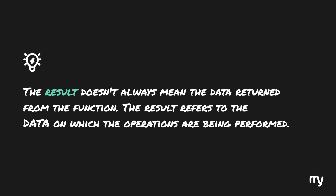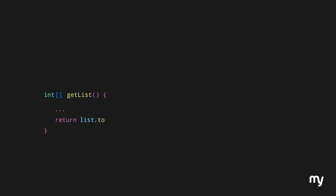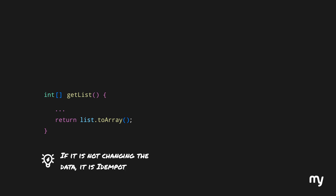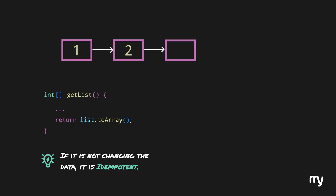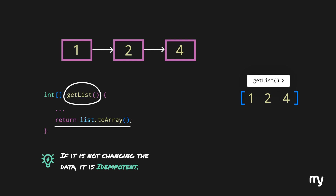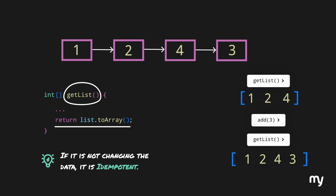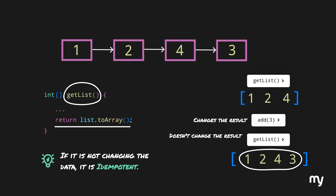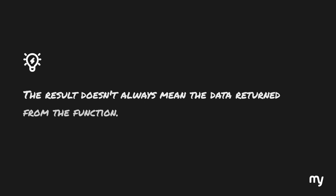An important point: the result doesn't always mean the data returned from the function. The result refers to the data on which the operations are being performed. What about functions which do not change the data, like a function which returns the elements of a list? The rule is: if it's not changing the data, it is idempotent. So even if a get list method returns different values every time — because the data was modified by an add function — the get list method will always be idempotent, since it has nothing to do with changing the result. Remember, the result doesn't always mean the data returned from the function.